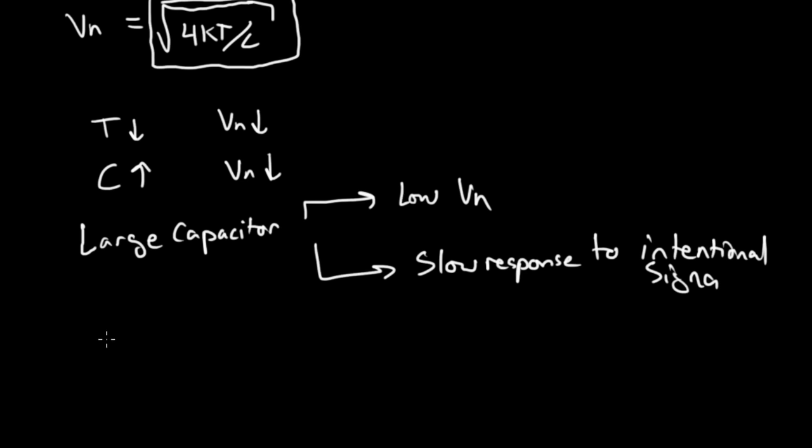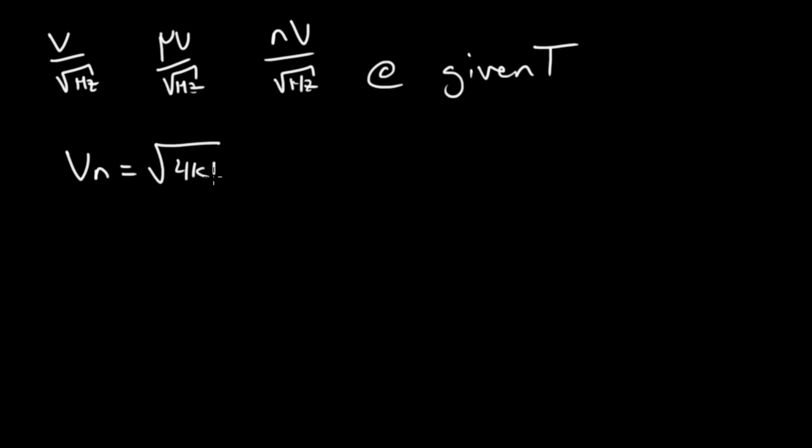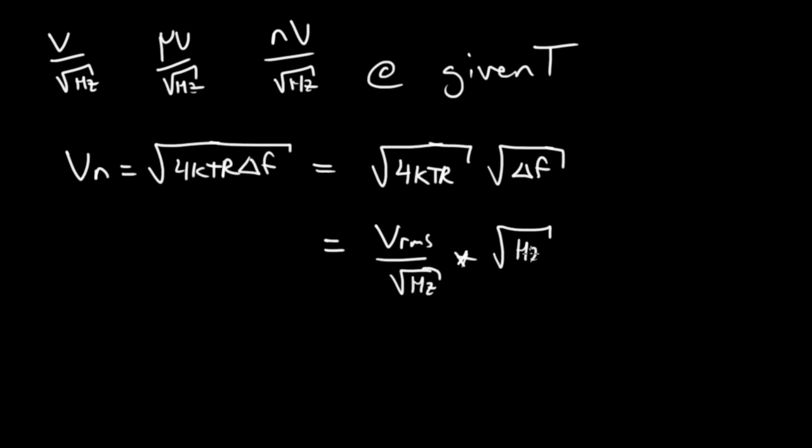Let me have a side discussion here. You'll often see noise spec'd in terms of, let me scroll down. It's related, but a little different. You'll often see noise spec'd for a system, for a component, or whatever, in terms of volts per square root hertz. Or microvolts per square root hertz. Or nanovolts per square root hertz. At a given temperature, at a given T. And this stems from the same thermal noise expression. So, VN equals 4KTR delta F, where if you break this up, you have 4KTR times delta F. And this is the same thing as saying volts, RMS, per square root hertz times square root hertz.